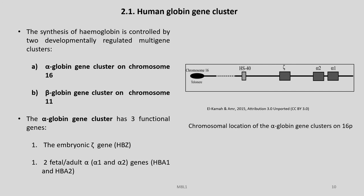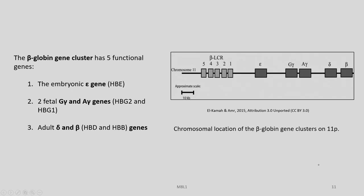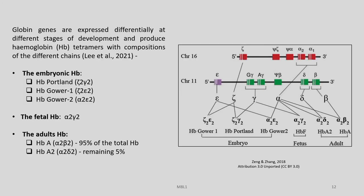The alpha-globin gene cluster has three functional genes: the embryonic zeta gene, the alpha-2 and alpha-1 genes. The beta-globin cluster has five functional genes: the embryonic epsilon gene, the two fetal G-gamma and A-gamma genes (HBG1), and the adult delta and beta HBD and HBB genes, as shown in the diagram.